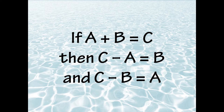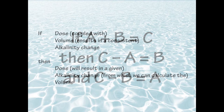The way that works in a swimming pool is that if we know from a dosage chart that a certain change in alkalinity in a certain size pool tells us how much chemical to add — we can rearrange that. If we add a certain amount of chemical to a pool and we get a certain change in alkalinity, we can use that to calculate the volume of the pool.